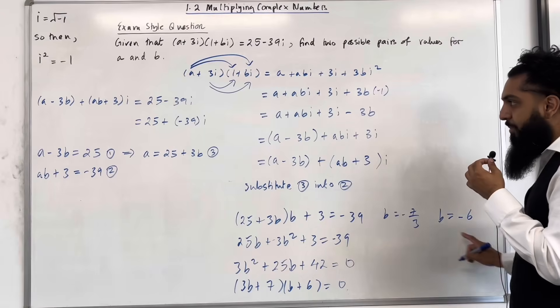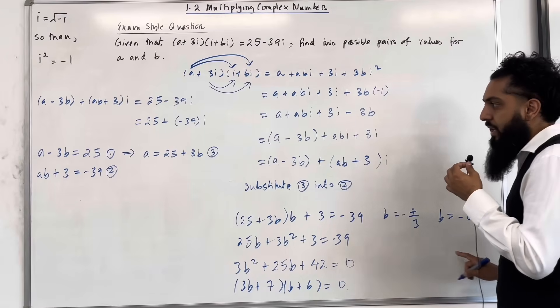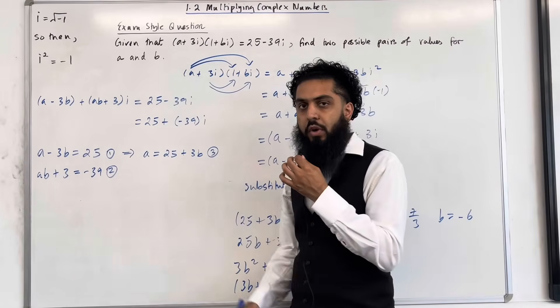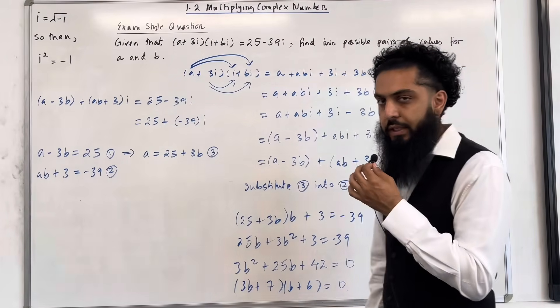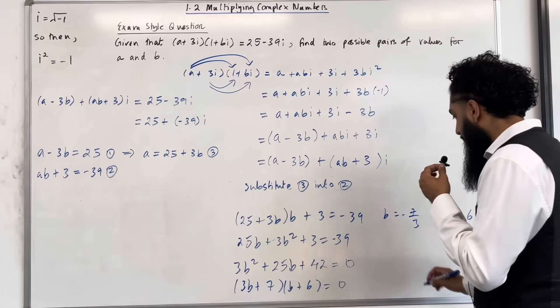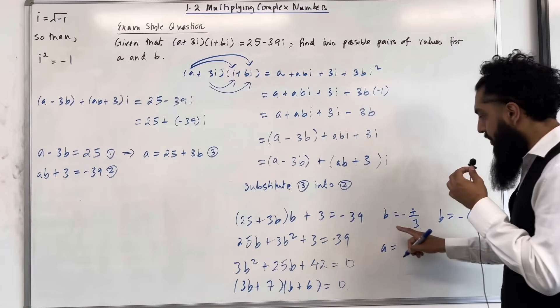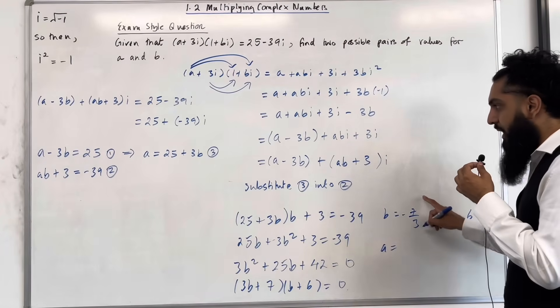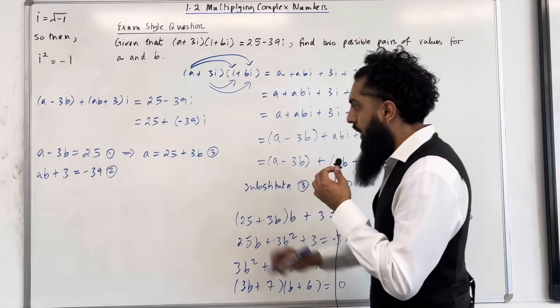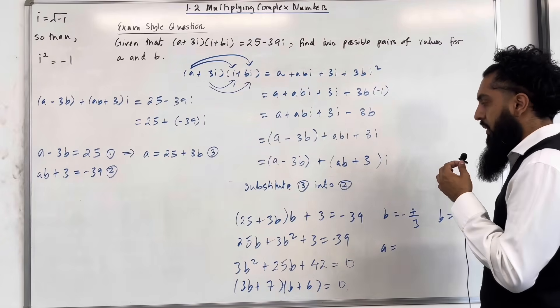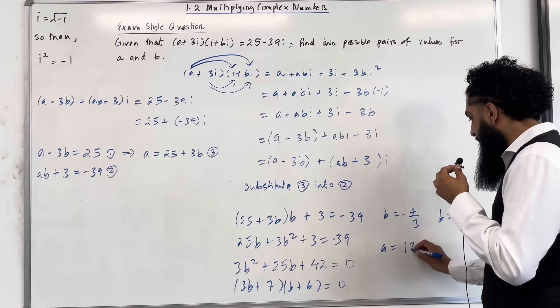Substitute these b values back into equation 3 to work out the corresponding a values. If I substitute b equals minus 7 over 3, I get a equals 18.